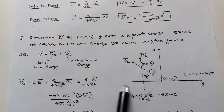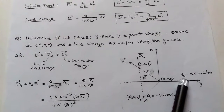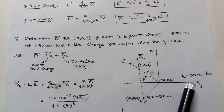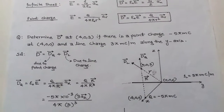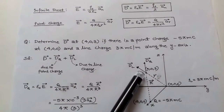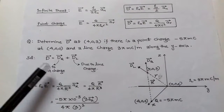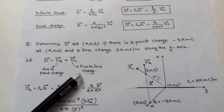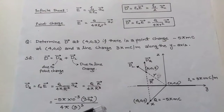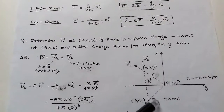The line charge is 3π mC/m along the y-axis — an infinite line along the y-axis with that line charge density. We have to determine the electric flux density D at (4,0,3). The total D equals the summation of electric flux density due to the point charge plus electric flux density due to the line charge. We calculate each individually and then add them.